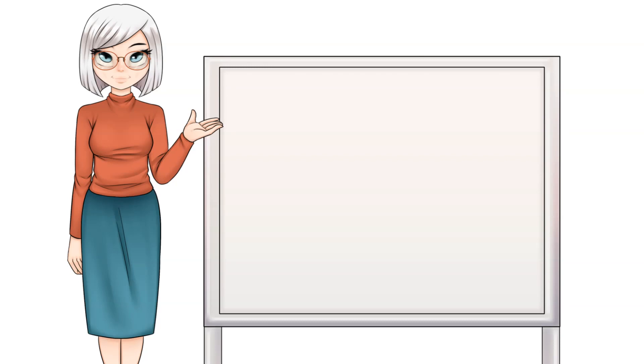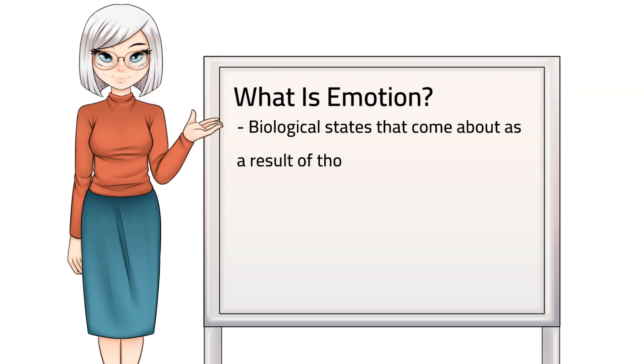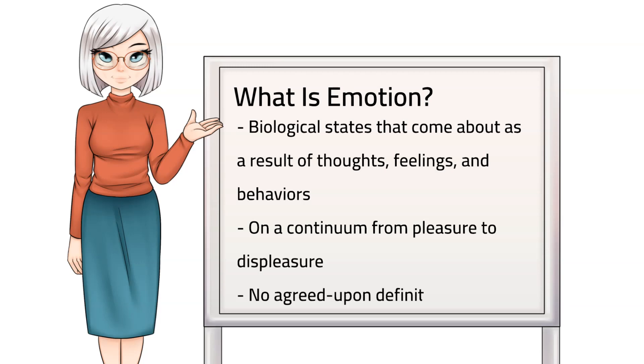Alright, let's get back to today's topic: emotion. What is emotion? Emotions are defined in various ways depending on who you ask. One might say that emotions are biological states that come about as a result of thoughts, feelings, and behaviors. Emotions may also exist on a continuum from pleasure to displeasure. But emotion theorists largely disagree on the exact definition of emotion.